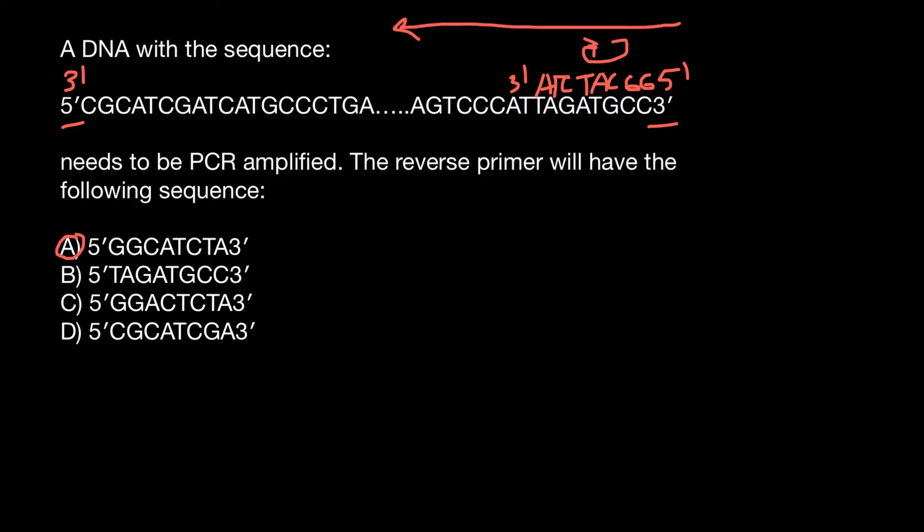For example, answer C is very similar, almost the same sequence, but here two bases flipped over, changed places. Here we have C-A, and here we have A-C. And of course, these two bases wouldn't fit this model because here we have G-T. So the sequence is C-A.